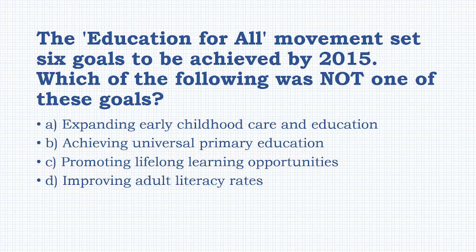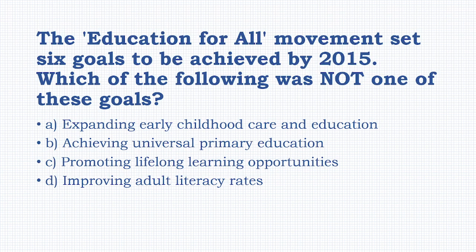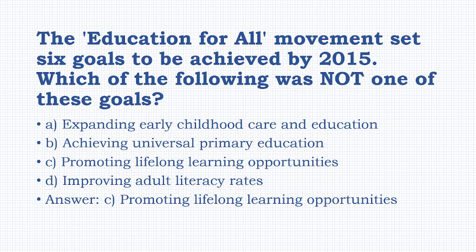The Education for All movement set six goals to be achieved by 2015. Which of the following was not one of these goals? Options: expanding early childhood care and education, achieving universal primary education, promoting lifelong learning opportunities, improving adult literacy. The answer is option C: promoting lifelong learning opportunities.